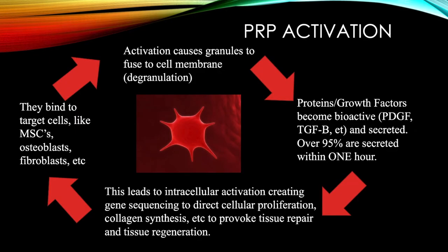Activating PRP is a fairly complicated process. Activation causes granules in the platelet to fuse to the cell membrane — that's called degranulation — which then activates the proteins and growth factors that get secreted. Most of this takes place within one hour. This leads to intracellular activation in the recipient, which creates gene sequencing directing cellular proliferation, collagen synthesis, and so on, which provokes tissue repair and regeneration.